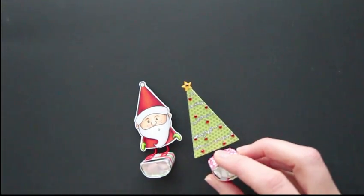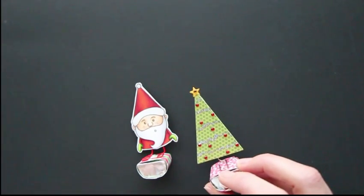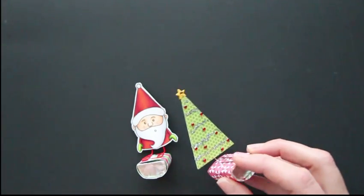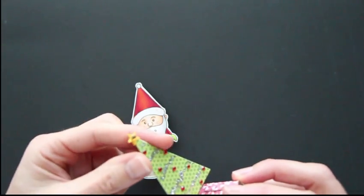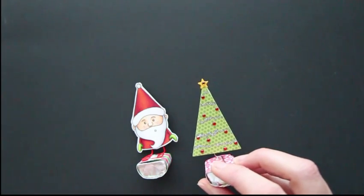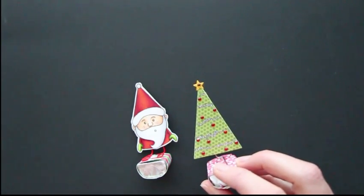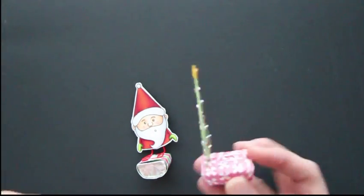For the Christmas tree, all I did is cut two pieces with the die—two pieces of patterned paper as well as cardstock to give it a little bit more firmness, and adhered the patterned paper to the cardstock and decorated it. That's it already.